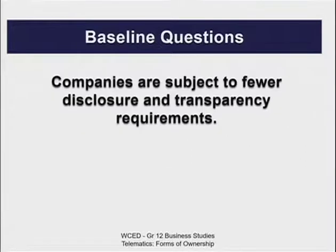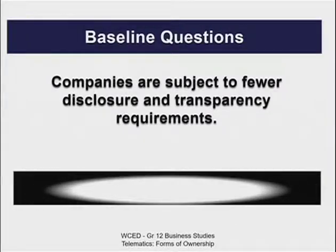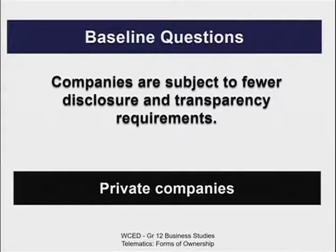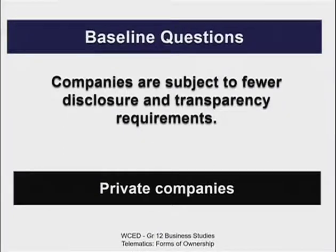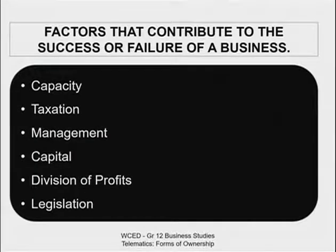A few more quick answers: the business unit is not separate from the owner — that is a sole trader. Members do not have shares but interest expressed as a percentage — that is a closed corporation. Companies of this type are subject to fewer disclosure and transparency requirements — the answer is a private company. Now, learners, the factors that contribute to the success or failure of a business are: capacity, taxation, management, capital, division of profits, and legislation. You must know those factors by heart.